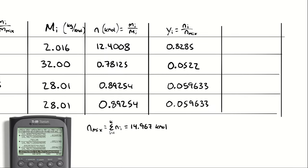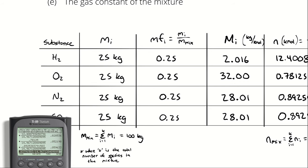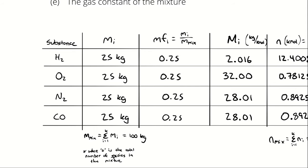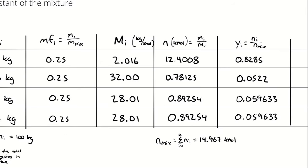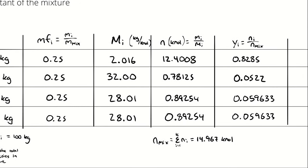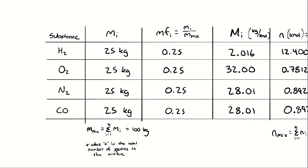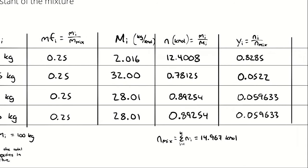So on a mass basis, this mixture is 25% hydrogen, 25% oxygen, 25% nitrogen, and 25% carbon monoxide. On a molar or volumetric basis, it is 83% hydrogen, 5.2% oxygen, and about 6% each of nitrogen and carbon monoxide. As a general rule, molar fractions are more useful in chemistry and are usually the ones described. If you're told a proportion without specification, assume it's a molar fraction — which is equivalent to a volumetric fraction for ideal gases.